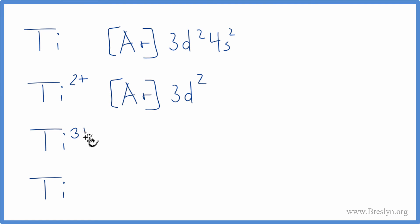For the 3+, we'll start out with this here. And we need to lose three electrons. So we lose these two here. Instead of two here, we'll just have a 1. That's titanium 3+. For the 4+, you can imagine what happens. We'll lose all four of these electrons here.